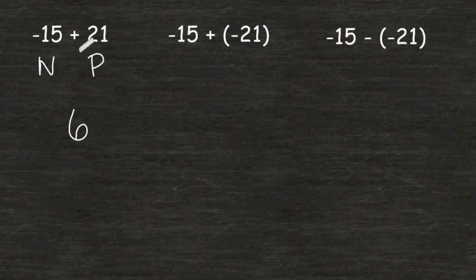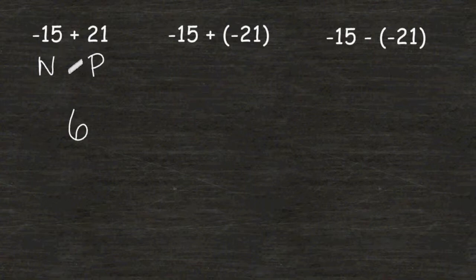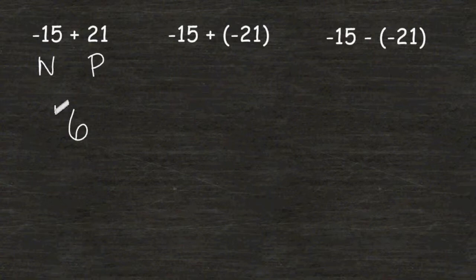Whenever you are subtracting numbers, the sign that you are going to use in the answer will depend on which of the two numbers was the greater distance away from zero, or has the greater absolute value. Because 21 has a greater absolute value than negative 15, our answer has to be positive.